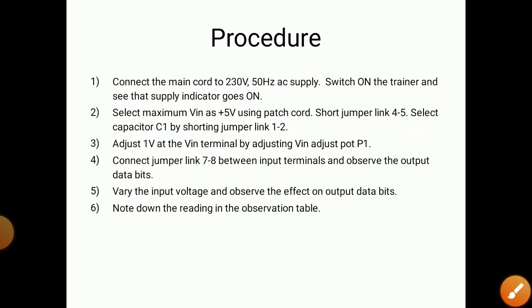The procedure: first, connect the main chord to 230 volts and 50 Hz AC supply. Then switch on the trainer and see that the supply indicator goes on. Second, select maximum V input as plus 5 volts using a patch cord. Short the jumper link 4 to 5, then select capacitor C1 by shorting jumper link 1 to 2.